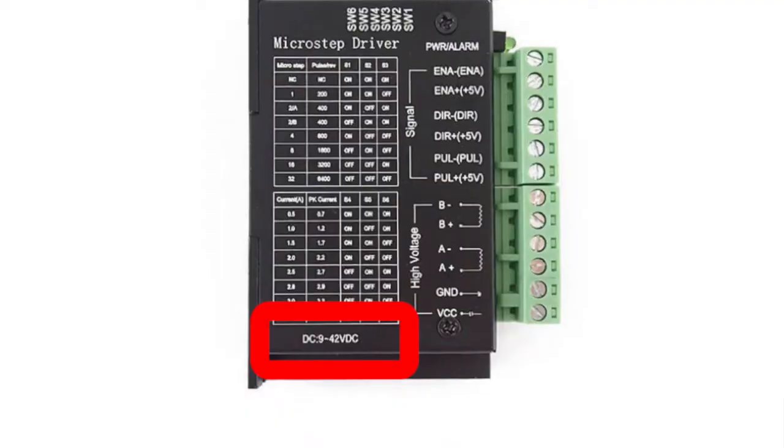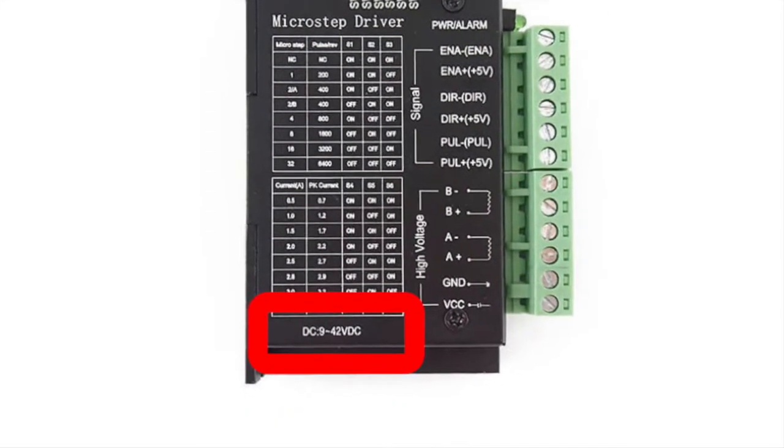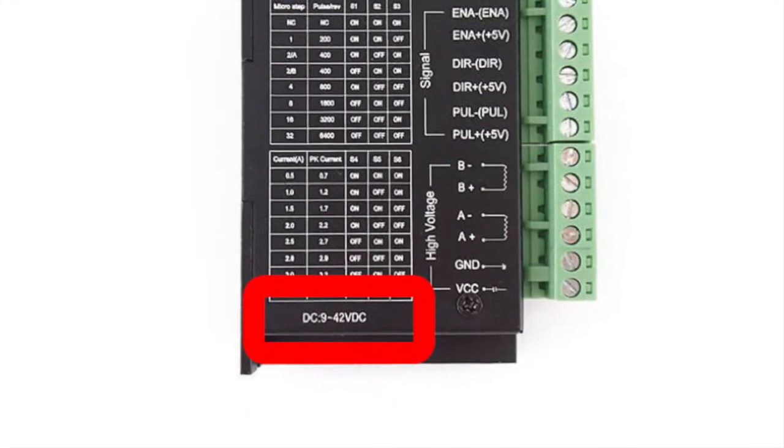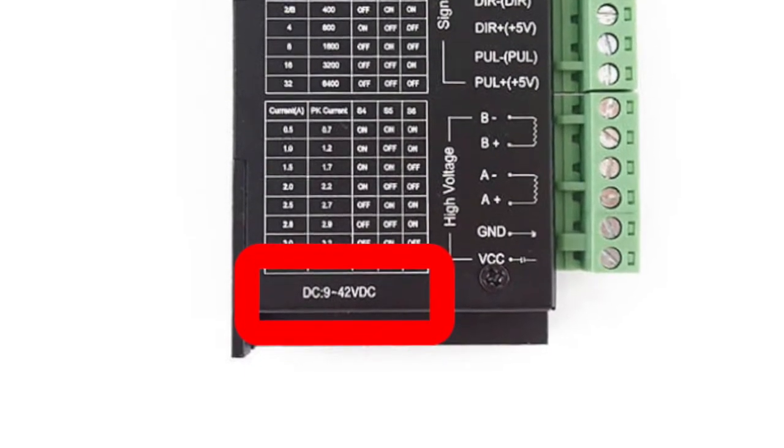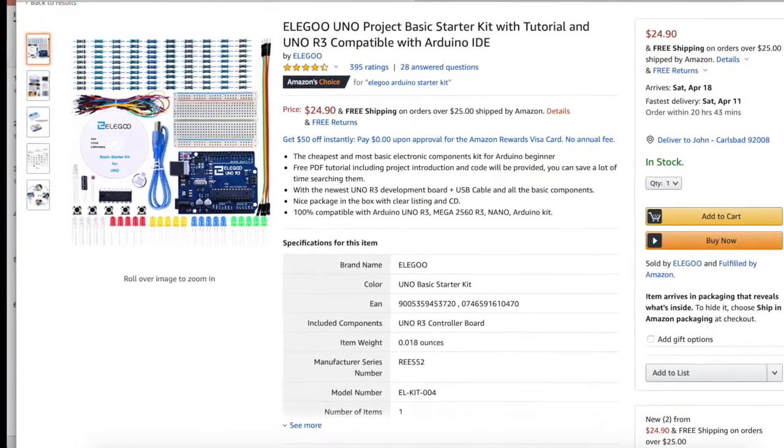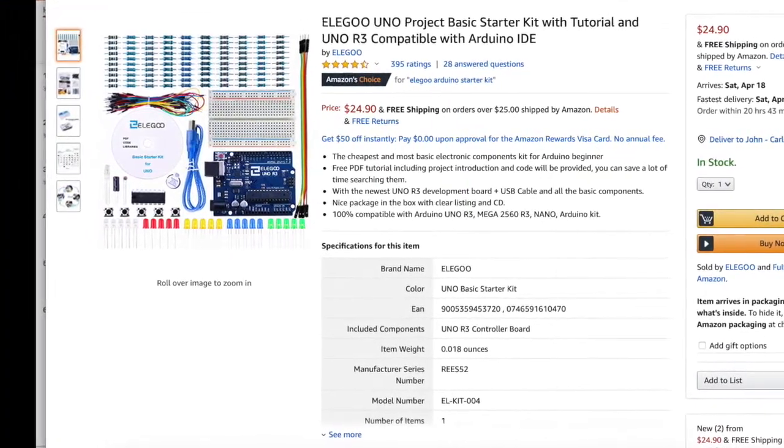It just needs to have a voltage between the stated voltage limits on the microstep driver and enough current to drive your motor. I also had some wires available from a basic Arduino kit I had on hand.